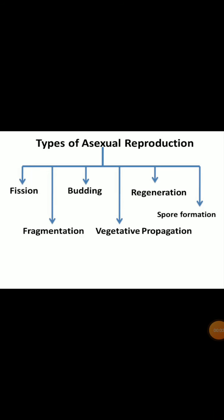Hello everyone, hope you are happy and healthy. We are discussing the types of asexual reproduction. In the previous session, we discussed fission, wherein we learnt binary fission and multiple fission. Also, we learnt about fragmentation and regeneration. In this session, let us first talk about another type of asexual reproduction, which is budding.